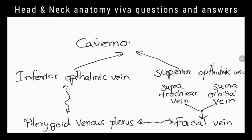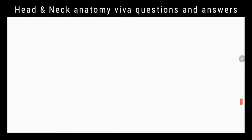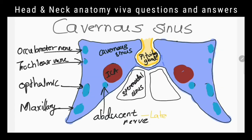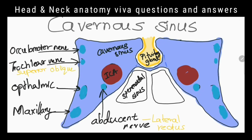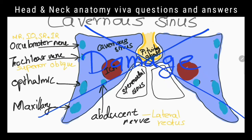Deep infection of the face can spread through the deep facial vein and pterygoid venous plexus. How can cavernous sinus damage cause paralysis of extraocular muscles? The abducent nerve, which travels through the sinus, supplies the lateral rectus muscle. The trochlear nerve, which travels in the lateral wall of the cavernous sinus, supplies the superior oblique muscle. The oculomotor nerve, which also travels in the lateral wall of the sinus, supplies the other four extraocular muscles: medial rectus, inferior oblique, superior rectus, and inferior rectus. Damage to the cavernous sinus can thus damage these nerves, leading to paralysis of those muscles.